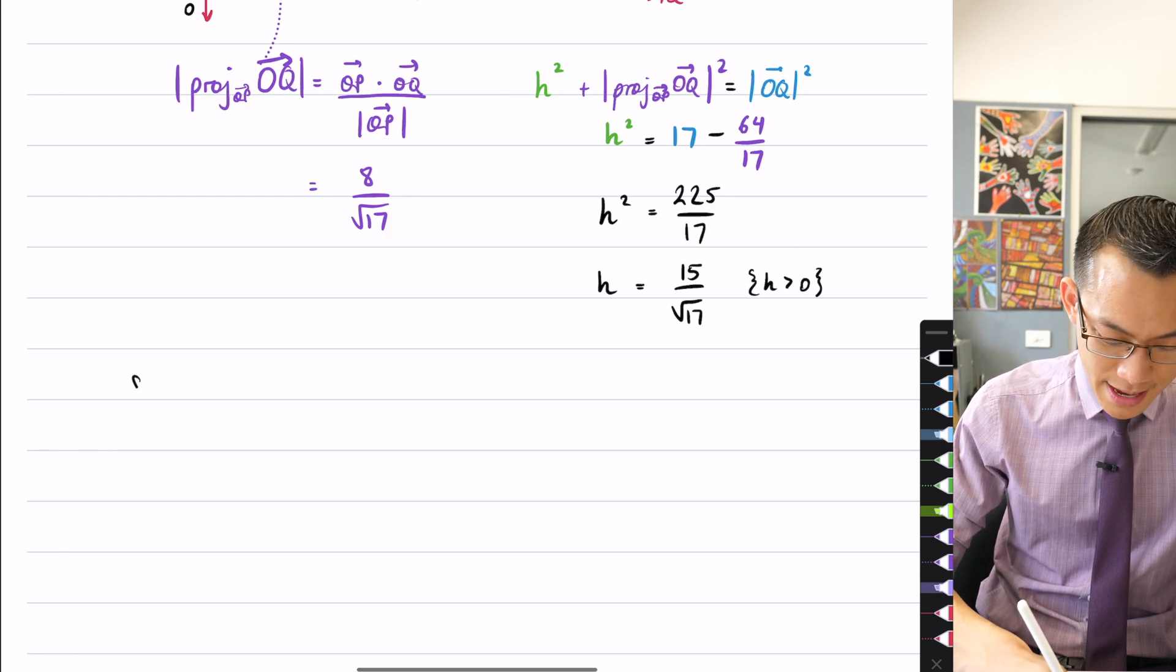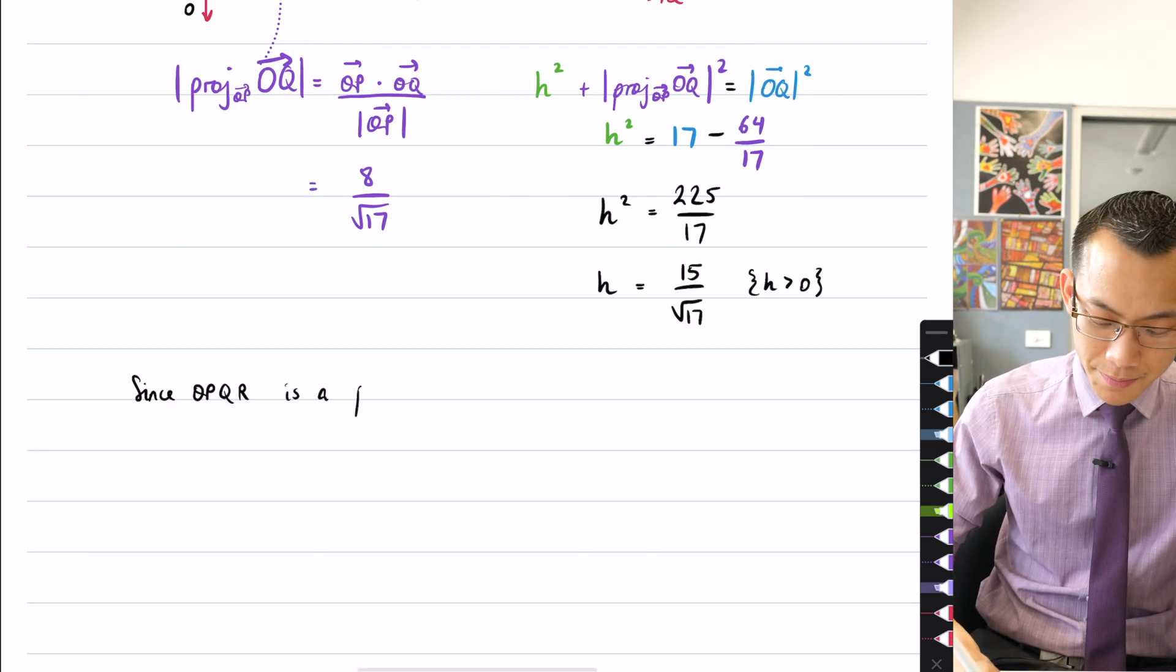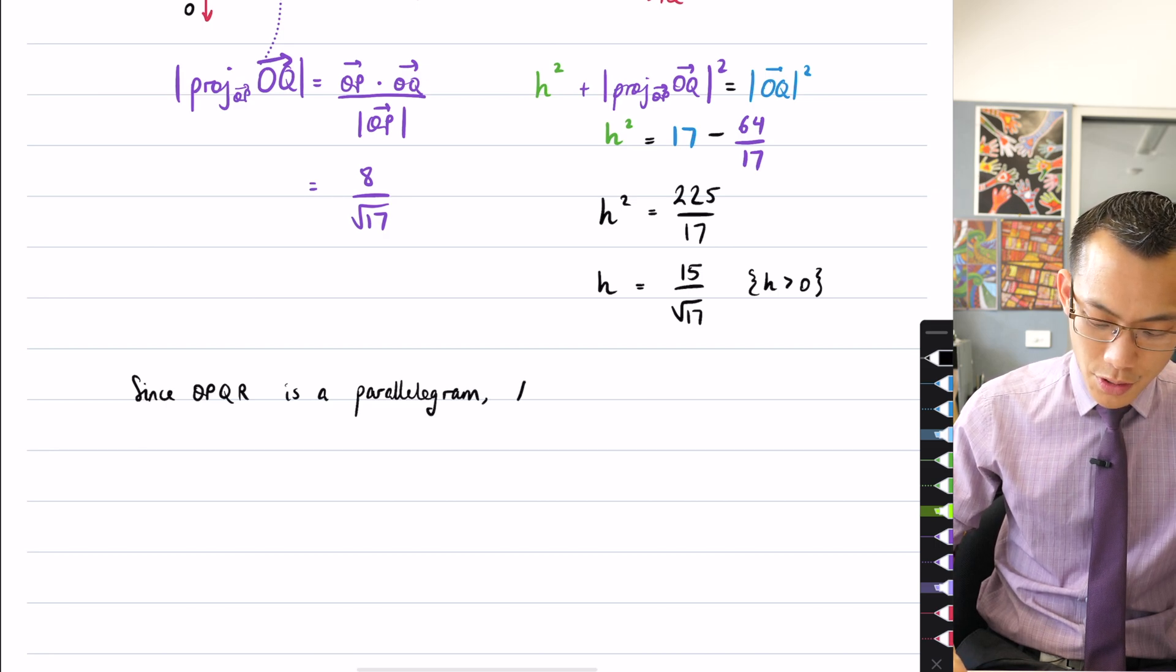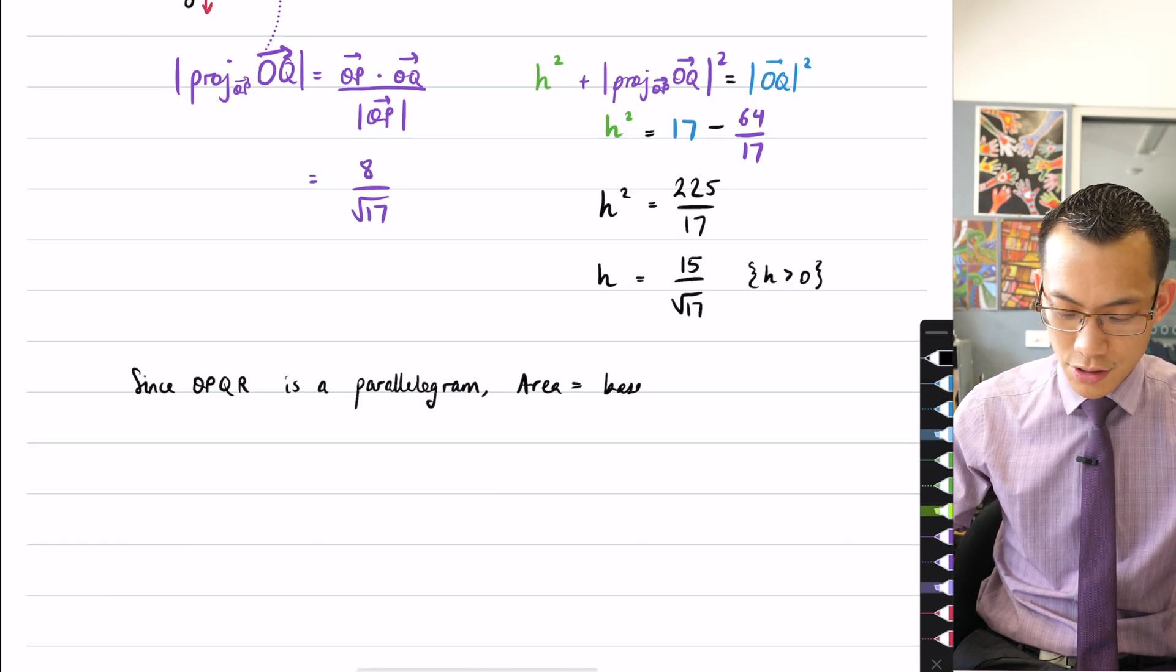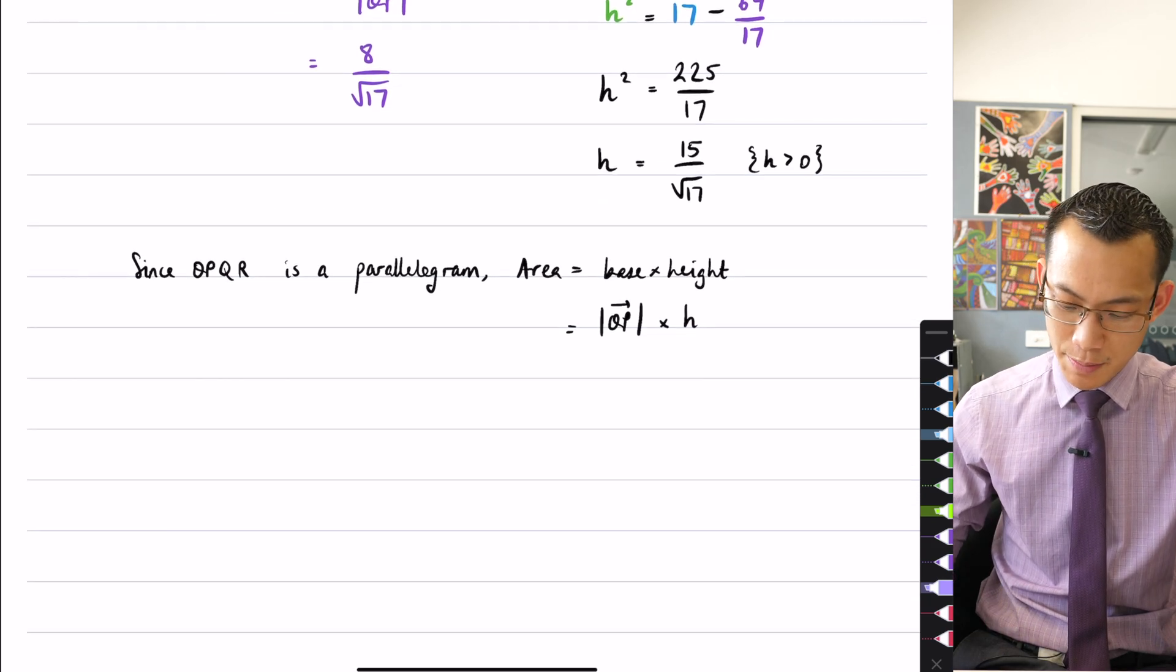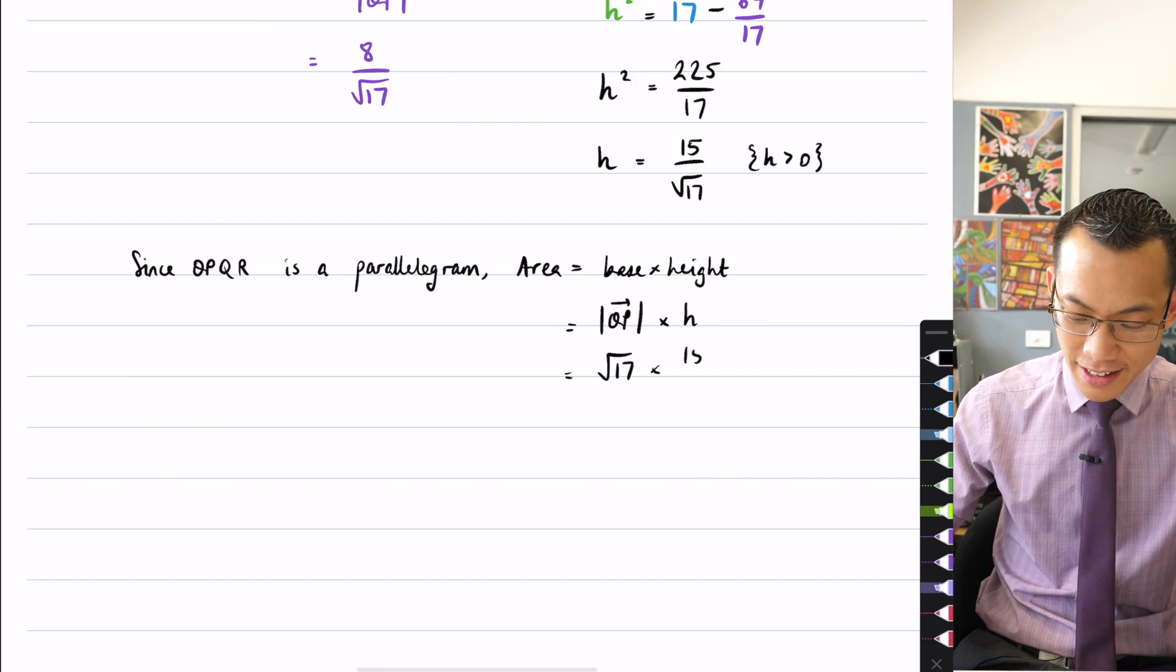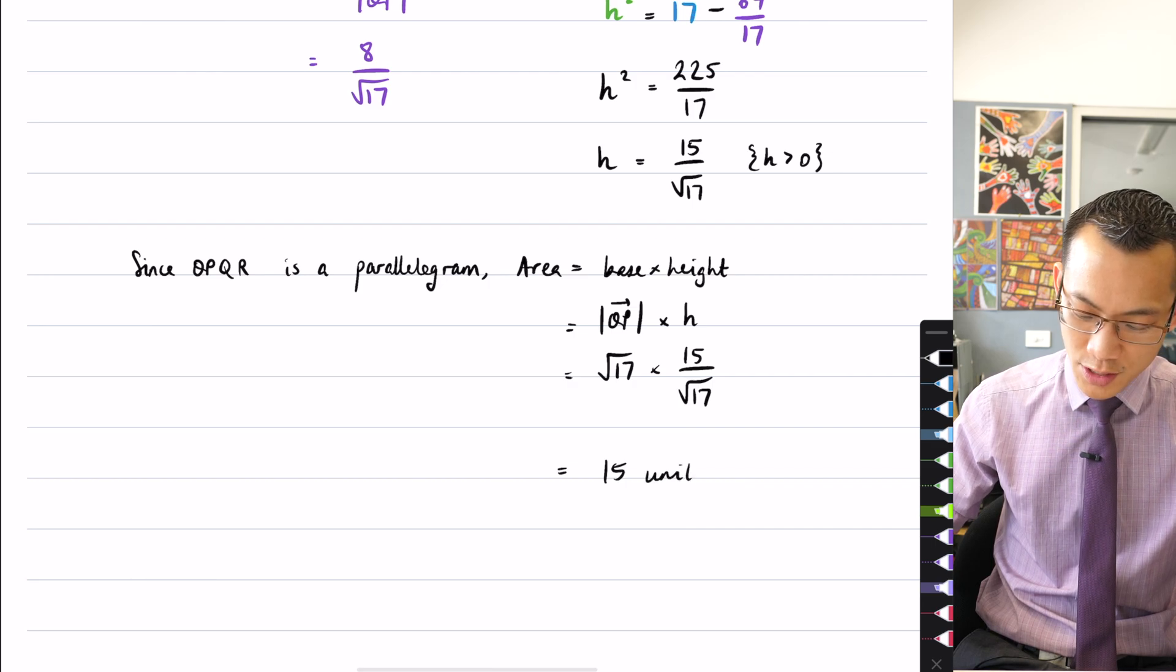So therefore, finally, since OPQR is a parallelogram as given in the question, the area is just base times height. So area equals, I'll write base times height just to make it clear what I'm multiplying. So this is going to be that magnitude of OP, which we already know, multiplied by H. That's the base and that's the height that I'm looking at in this particular case. Are you sick of me yet writing the square root of 17 multiplied by 15 on the square root of 17? So that's why you get one last time the 15 square units as required.